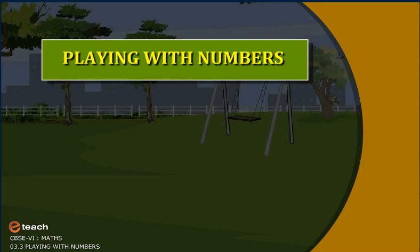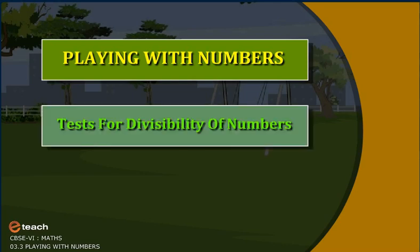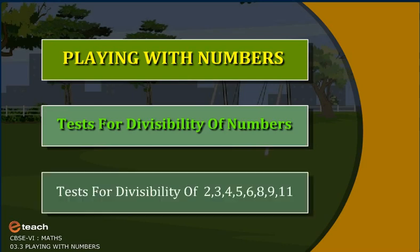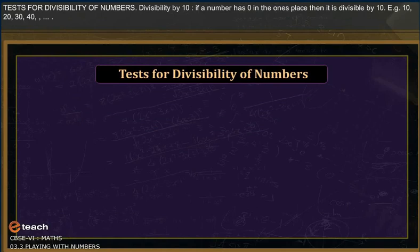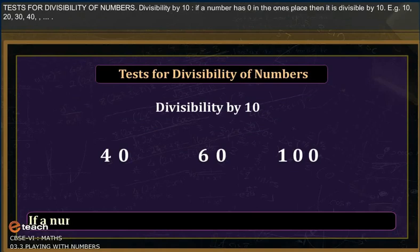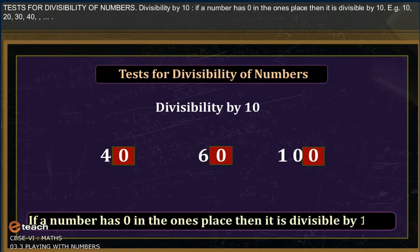Playing with Numbers: test for divisibility of numbers — divisibility by two, three, four, five, six, eight, nine, ten, and eleven. Divisibility by ten: if a number has zero in the ones place, then it is divisible by ten. Examples: 10, 20, 30, 40, and so on.